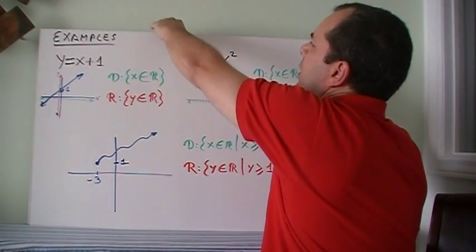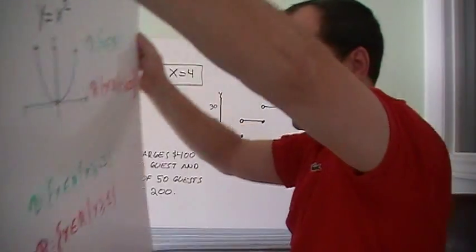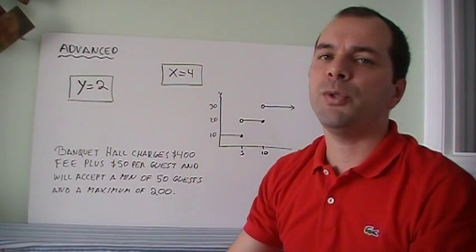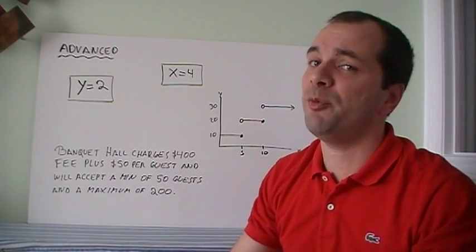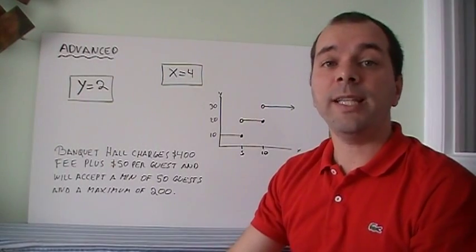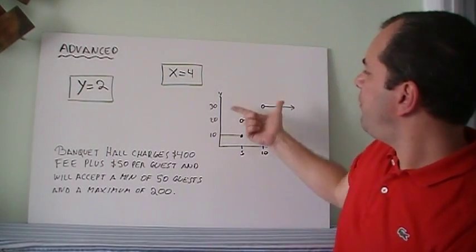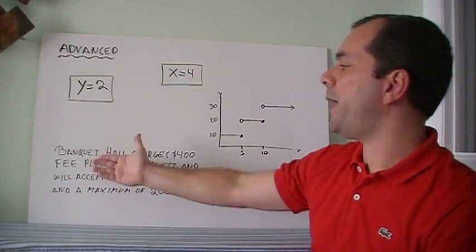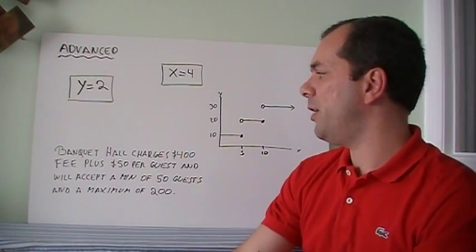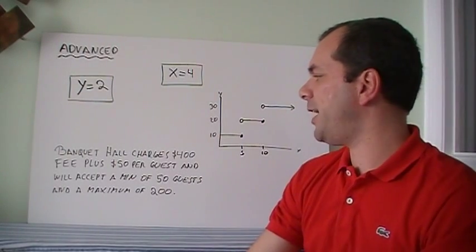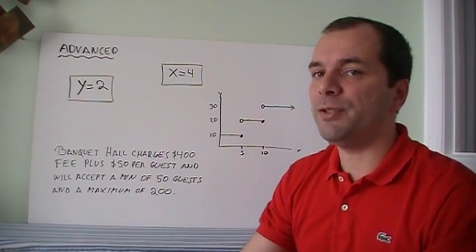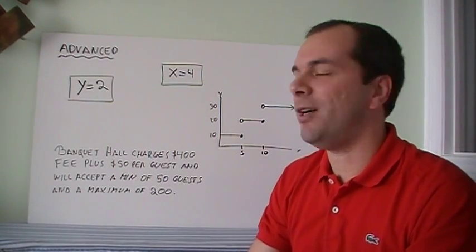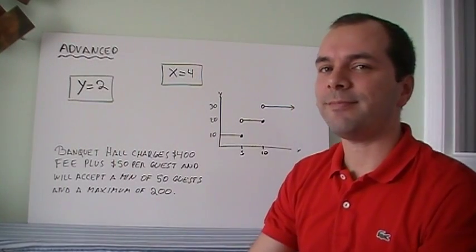Some of the harder examples that we're going to be seeing probably in classes. See if you can get a chance to look at this right now. What does y equal 2 look like? Maybe you remember and let's make it easy. What does x equals 4 look like? And then find the domain and the range. Or a function like this when you have step functions. Or a word problem which says banquet hall charges $400 fee plus $50 per guest, and will accept a minimum of 50 guests and a maximum of 200 guests. So you can probably get the domain and the range for these functions. I'll see you soon.